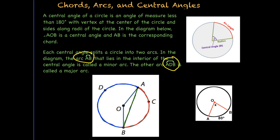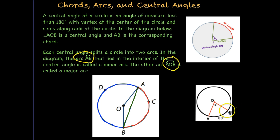Let's look at a quick example so we can understand the relationship between a central angle and its intercepted arc. The relationship between the two is that they are the same. So if the intercepted arc AB, which is a minor arc, is 80 degrees, then so is that central angle.